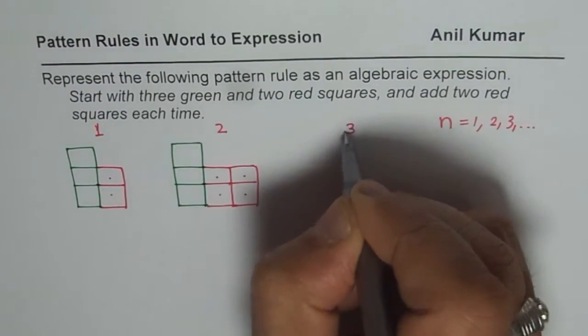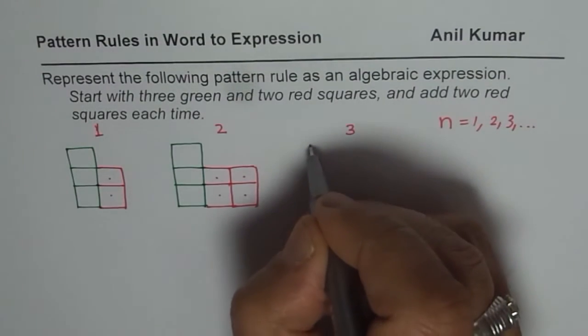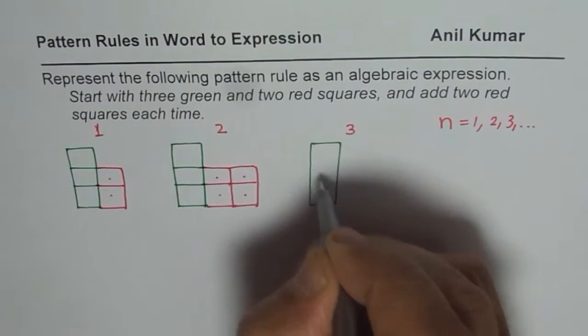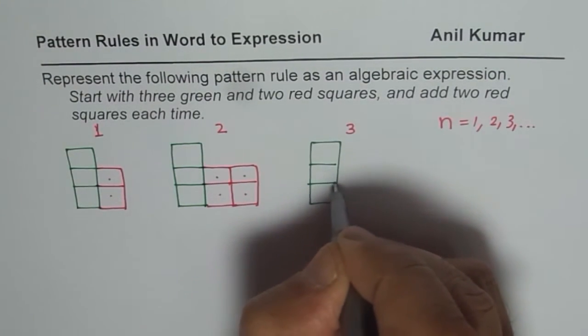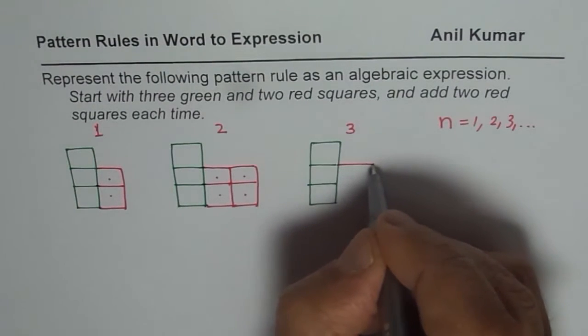Let us see in the third position how we can sketch this situation. So here we again have 3 green as in the previous case, 4 reds. Let me copy that part first.